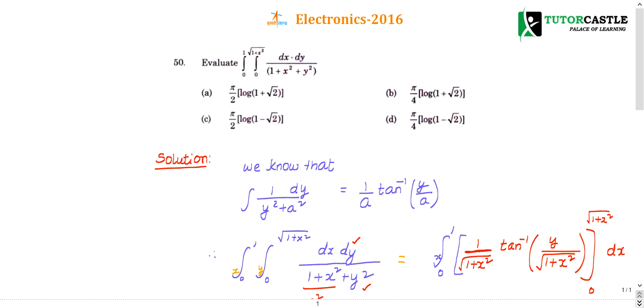Question number 50: Evaluate the double integral from 0 to 1 and 0 to under root 1 plus x square of dx dy divided by 1 plus x square plus y square. You can solve this by polar coordinates but it takes a lot of time and you may not get the exact results if you go for polar coordinates.